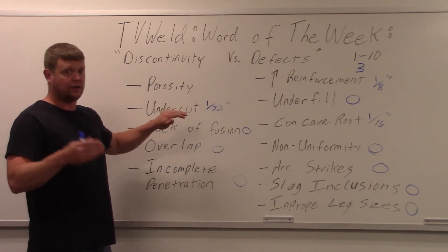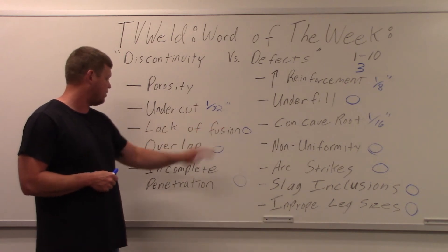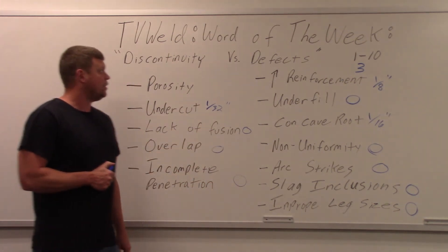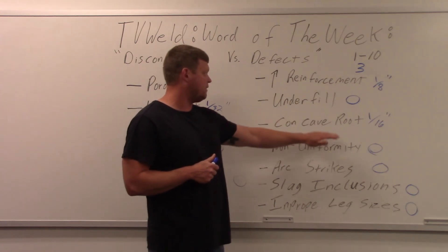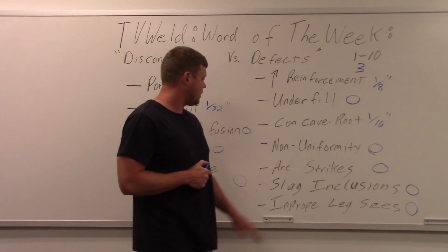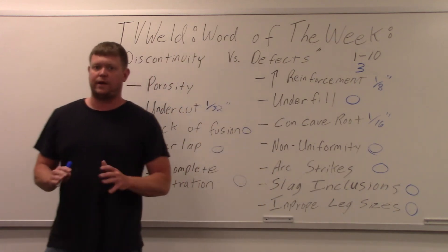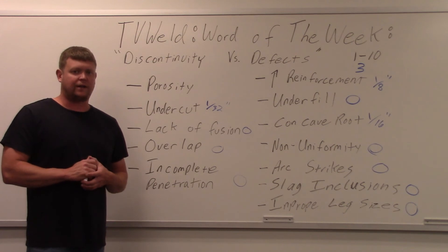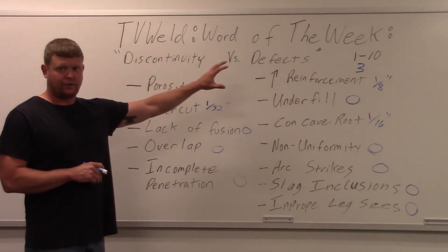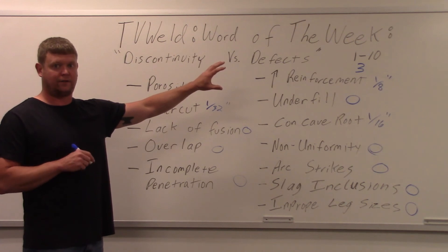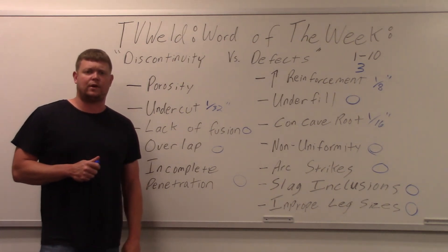To recap: porosity — check the other video for parameters. Undercut — 1/32 of an inch, anything over is a defect. Lack of fusion — can't have it. Overlap — can't have it. Incomplete penetration — can't have it. Excessive face reinforcement — up to an eighth of an inch. Underfill — can't have it. Concavity — 1/16 of an inch, anything over is a defect. Arc strikes, slag inclusions, improper leg sizes — can't have any of them. All this depends on the code you're using. Hopefully that gives you a good idea of the difference between discontinuity and defect. These are all discontinuities; they become a defect when you pass the code limit. Thanks for watching — subscribe to TV Weld and we'll see you next time.